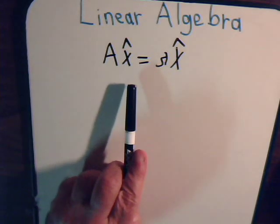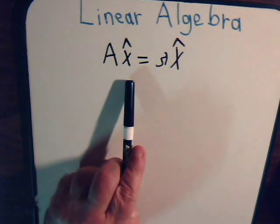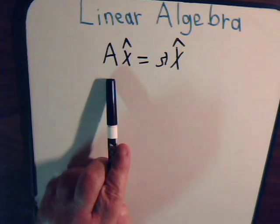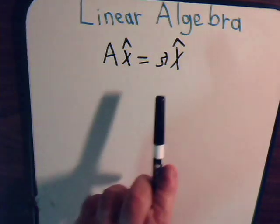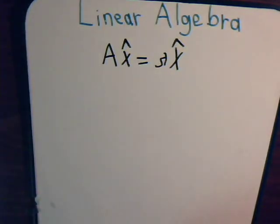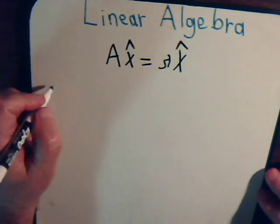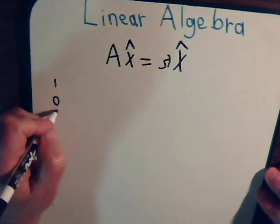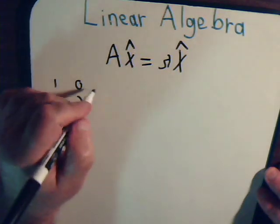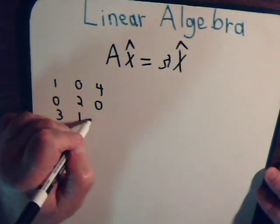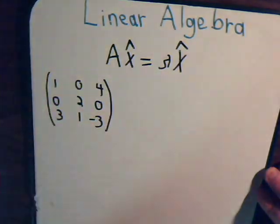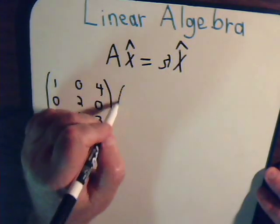It turns out that sometimes when you multiply a vector by a matrix and you go ahead and do the whole multiplication process, all you end up with is just some constant times that vector. For example, suppose we have this 3 by 3 matrix, and we multiply it by this vector.